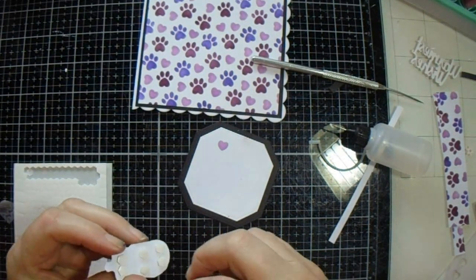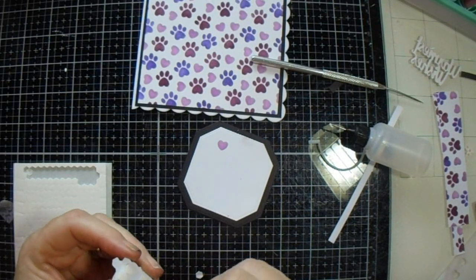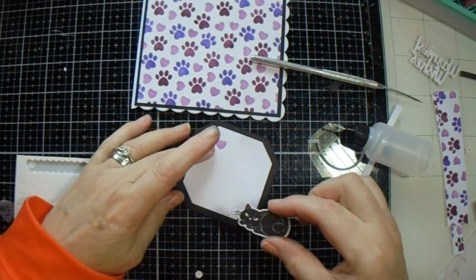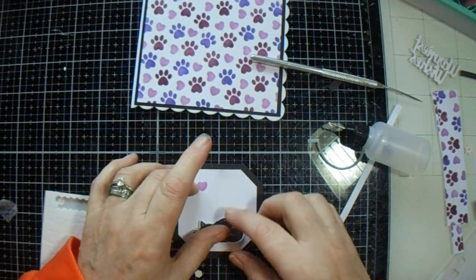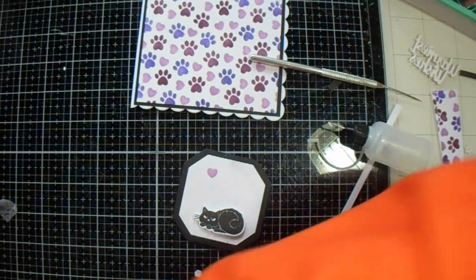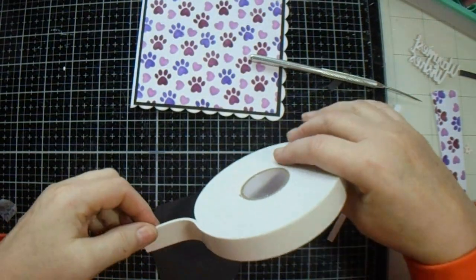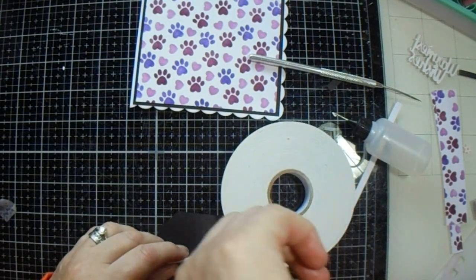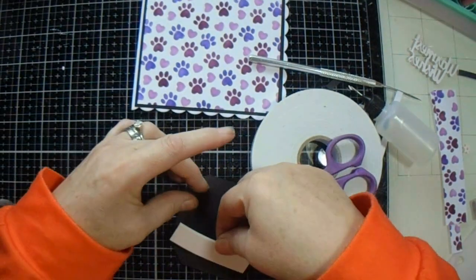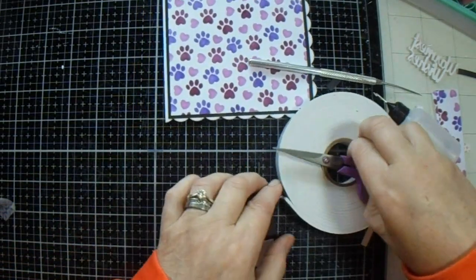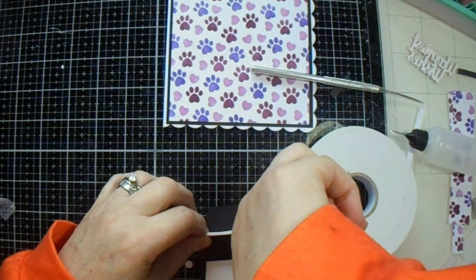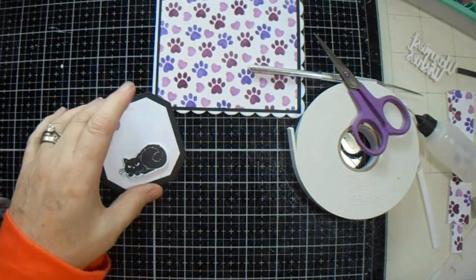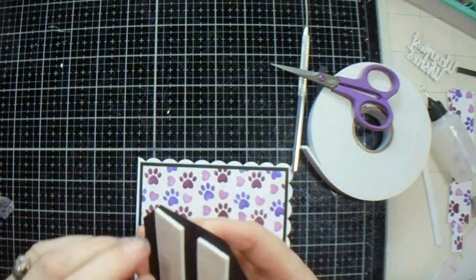I just use whichever foam tape I find available. I tidied out the other day and found these foam things from Stampin' Up, so I'm using them up as well. Waste not, want not. I'm cutting a couple of bits of foam tape for the back, and that is going to go on there like that.